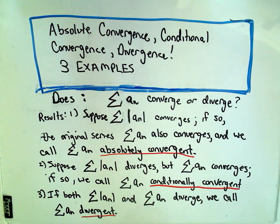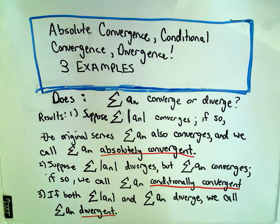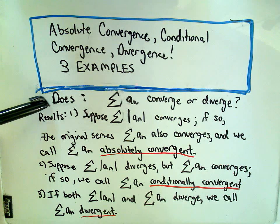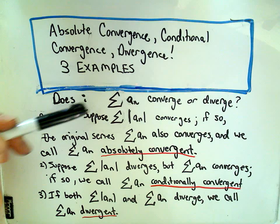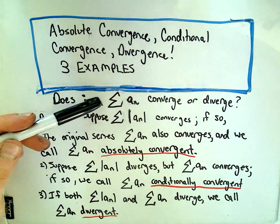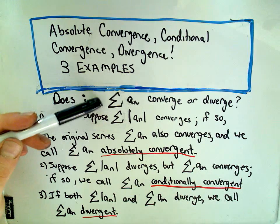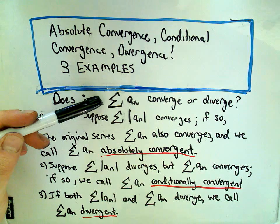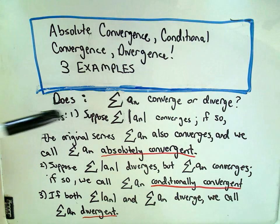In this video I'm going to talk about series and absolute convergence, conditional convergence, and divergence. I'm going to do three examples, one of each. Basically the question is, does the series a sub m, whatever it starts at, does the series converge or diverge? This is the question we ask when we talk about series.